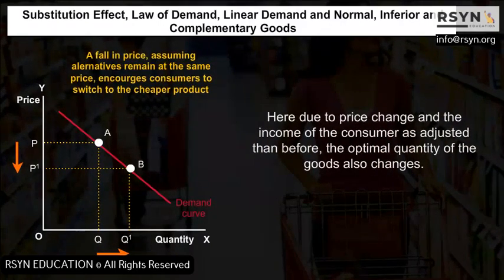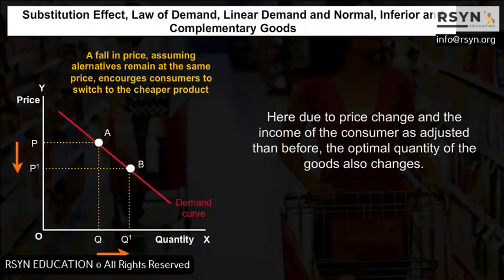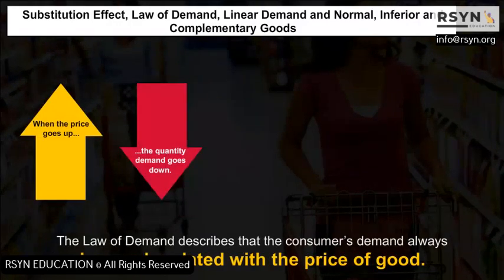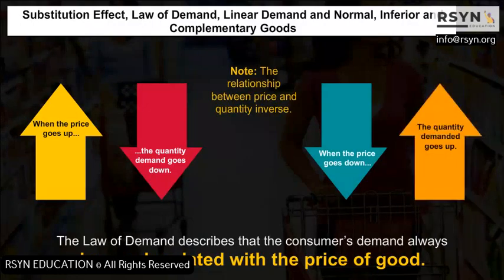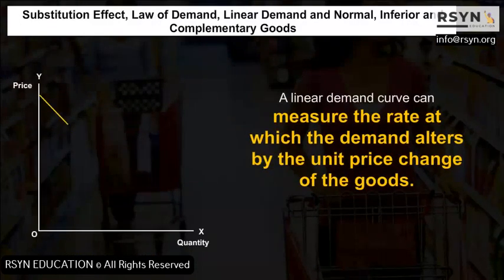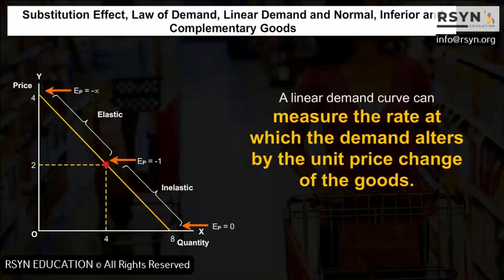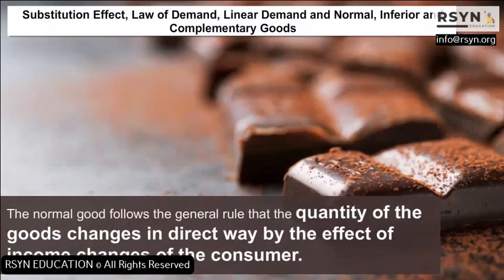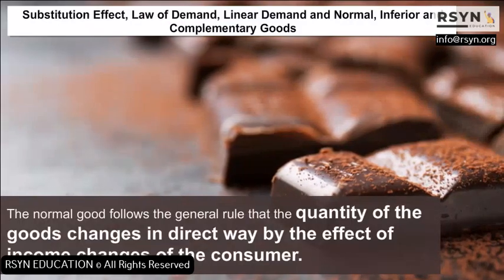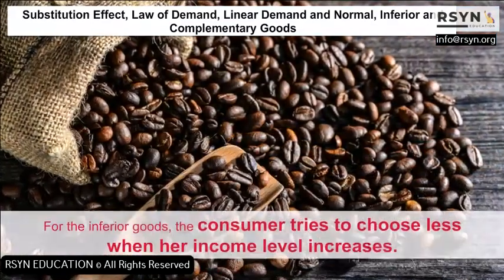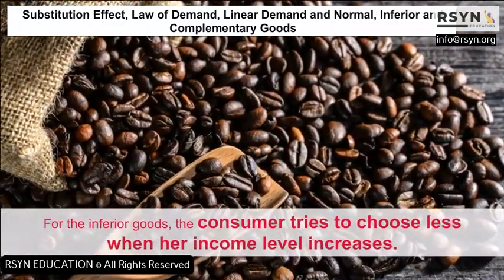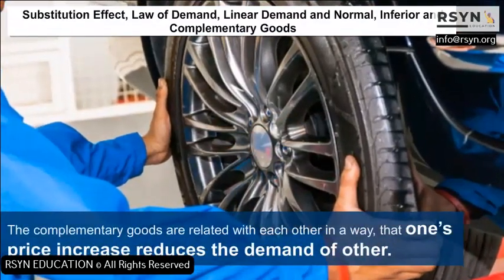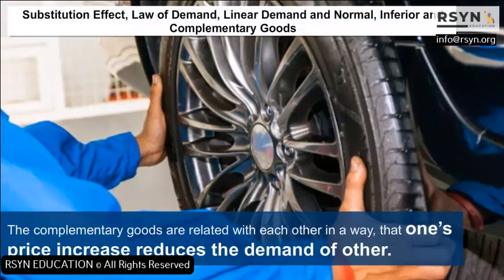Due to price change and adjusted income, the optimal quantity of goods also changes. The law of demand states that the consumer's demand is always inversely related to the price of the good. A linear demand curve measures the rate at which demand alters per unit price change. Normal goods follow the rule that quantity changes directly with income changes of the consumer. For inferior goods, the consumer chooses less when her income level increases. Complementary goods are related such that a price increase in one reduces the demand of the other.